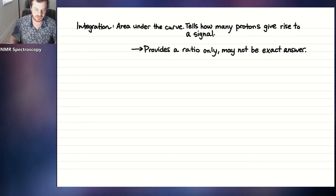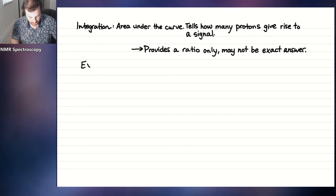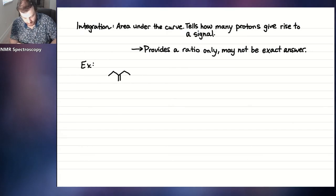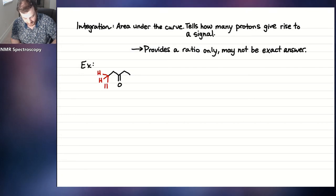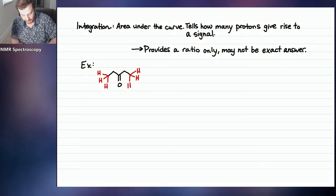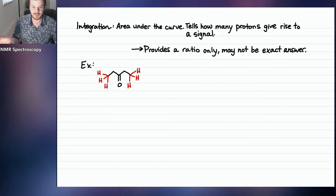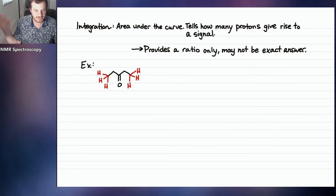Let's take a look at an example — let's draw pentanone. Now let's draw in all the hydrogens. There are methyl groups on the left and right, and because of symmetry, all six of those protons are in the same chemical environment — both equidistant from the ketone in the middle. They are identical, so all six protons give rise to only one signal.